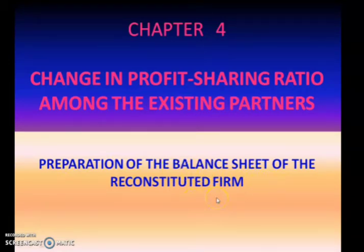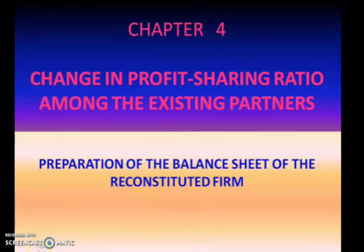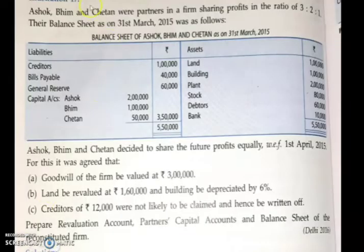If you remember, in our previous class we have discussed about the preparation of the revaluation account. Today we will discuss the same by doing a problem. Ashok, Bhim, and Chetan were partners in a firm sharing profits in the ratio of 3:2:1.